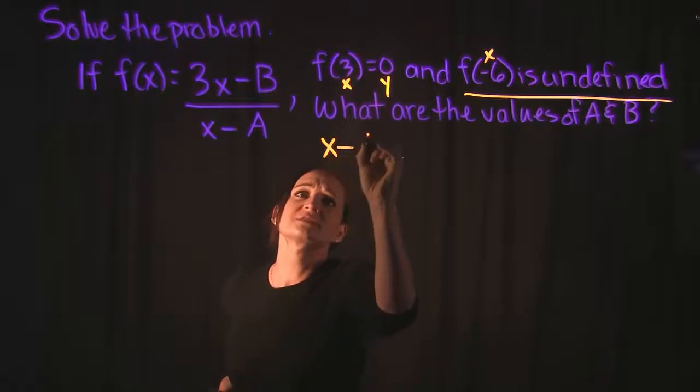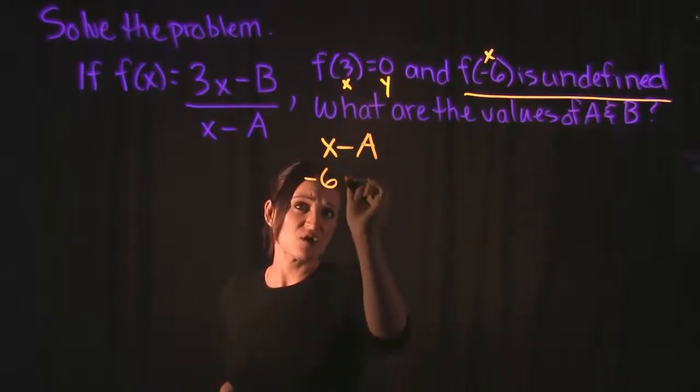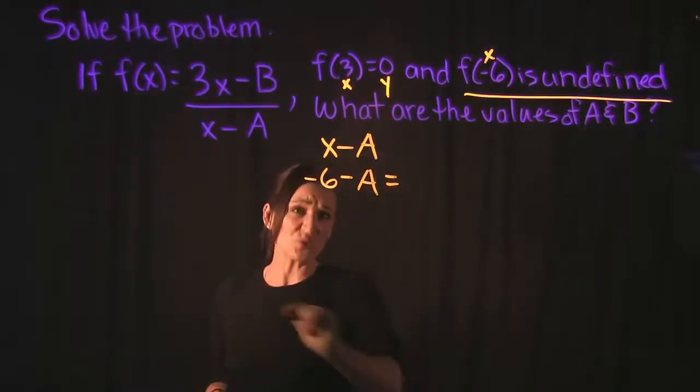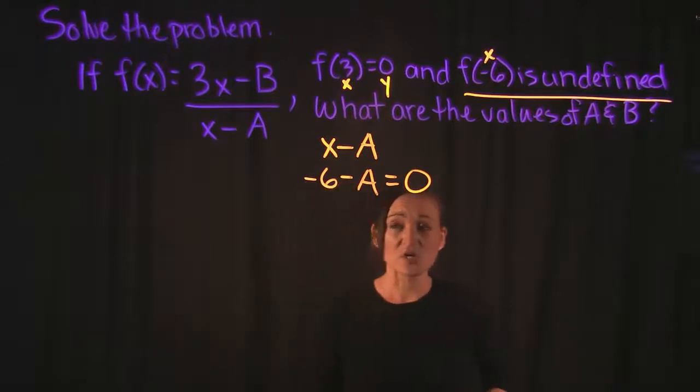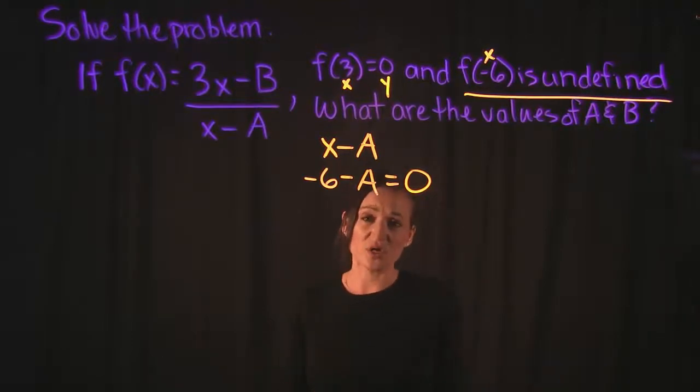So our denominator is x minus a. I'm going to plug in negative 6 for x, and it says that when we do this, the denominator is equal to 0. So that tells me that negative 6 minus a is going to equal 0. That's what being undefined means.